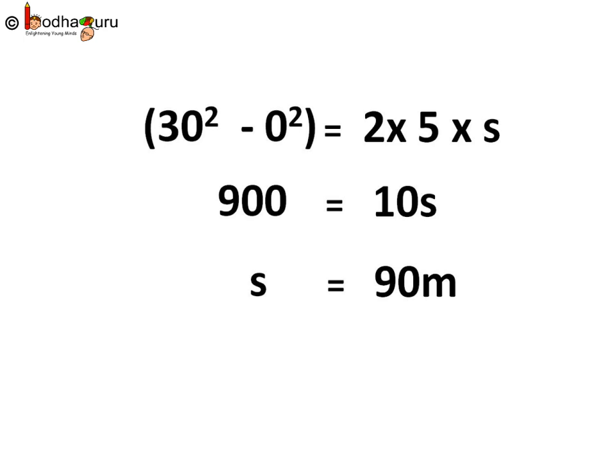And how much distance will it go in this time? Now we have u, v and acceleration a. We need to find s. We can use v square minus u square equal to 2as. So 30 square minus 0 square is equal to 2 into 5 into s. Left hand side 900 and right hand side will be 10s. So s equal to 900 by 10 which is equal to 90 meters. The car will go 90 meters in 6 seconds.